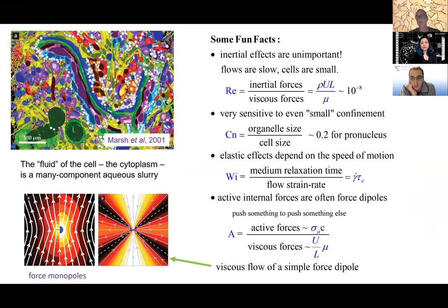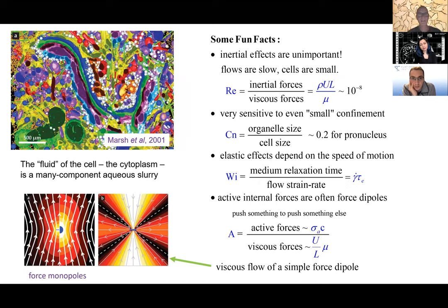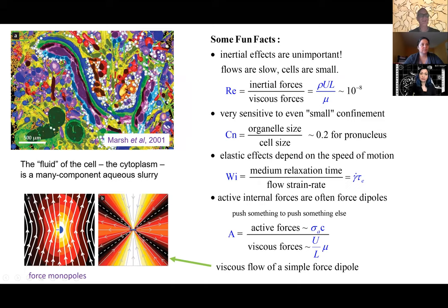What does the cytoplasm — the fluid inside the cell — really look like? Electron microscopy shows it's a many-component aqueous slurry, full of inclusions of different sizes, vesicles, and things carrying proteins. There are some things we can say: it does behave like a viscous medium if things are moving slowly enough, which they always are. Inertial effects inside of cells are just absolutely unimportant.